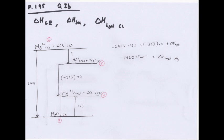To draw the cycle: first draw the lattice enthalpy (gaseous ions to solid, step 2 to 1). Then step 2 to 3 is hydration of magnesium. Step 3 to 4 is hydration of chloride — because there are 2 Cl⁻ ions in MgCl₂, you multiply the enthalpy value by two. This gives both ions in aqueous conditions. The textbook value is on page 195, question 3b.